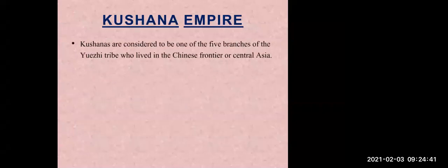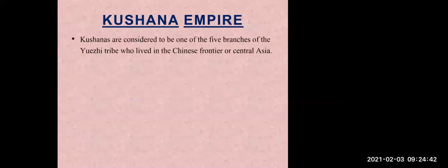Now let's see about the Kushana Empire. The Kushanas are considered to be one of the five branches of the Yuezhi tribe, which lived in the Chinese frontier or Central Asia.